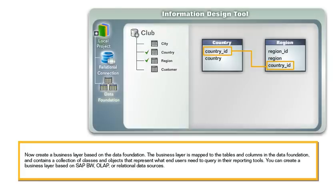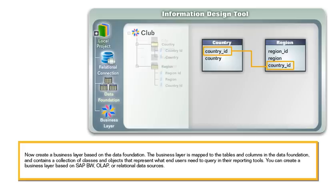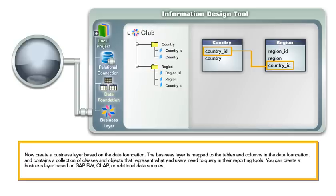Now create a business layer based on the data foundation. The business layer is mapped to the tables and columns in the data foundation, and contains a collection of classes and objects that represent what end users need to query in their reporting tools. You can create a business layer based on SAP BW, OLAP, or relational data sources.